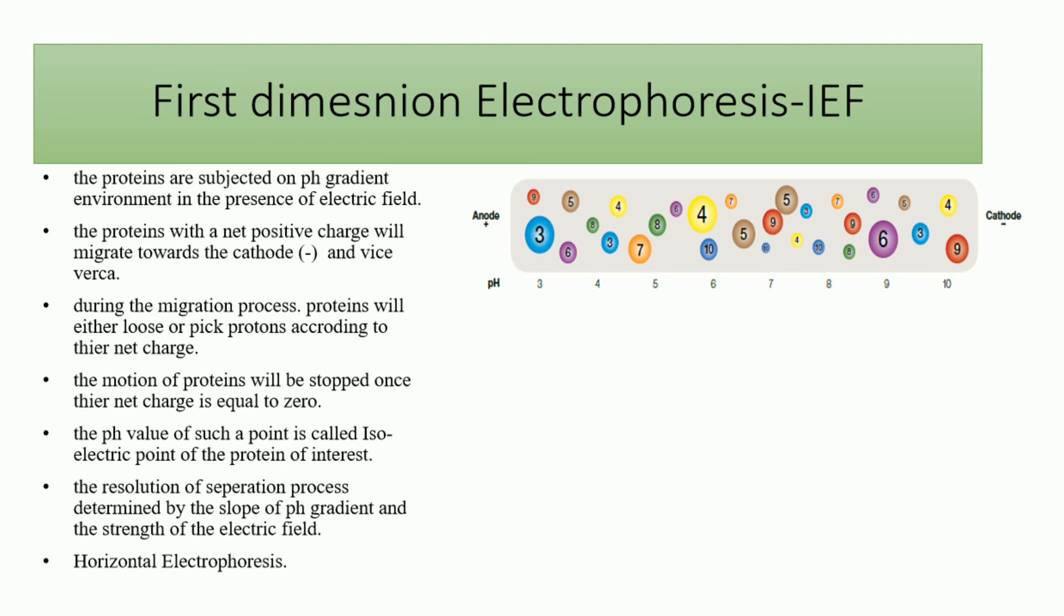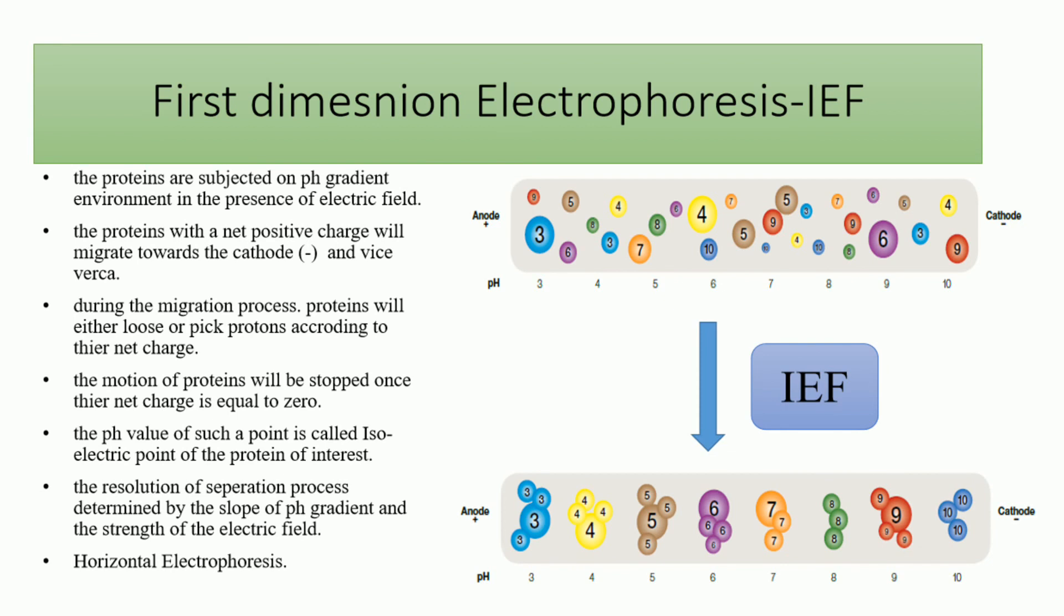Subject those proteins to an electric field which makes them move in the opposite direction of their charge. Negatively charged proteins will move to the acidic pole of the IPG strip and vice versa. During the motion of proteins, they either pick protons or lose protons until their net charge is equal to zero. This is known as the isoelectric point. In this case, they will stop moving. By this, we can separate the proteins based on their isoelectric points.